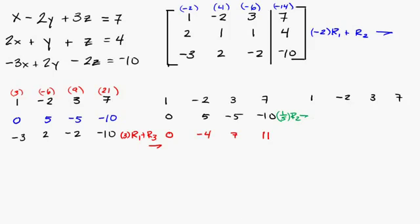I think you're kind of getting the idea. So let me go ahead and do that. 1/5 times 0 is 0. 1/5 times 5 is 1. 1/5 times negative 5 is negative 1. And this is going to be negative 2. And we just go ahead and copy everything else over.